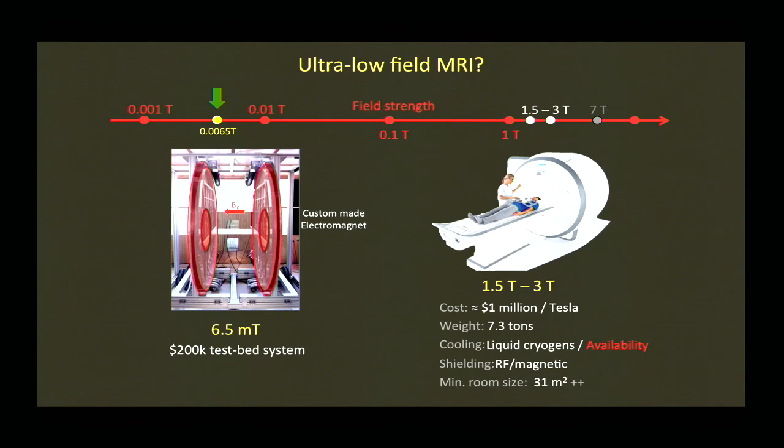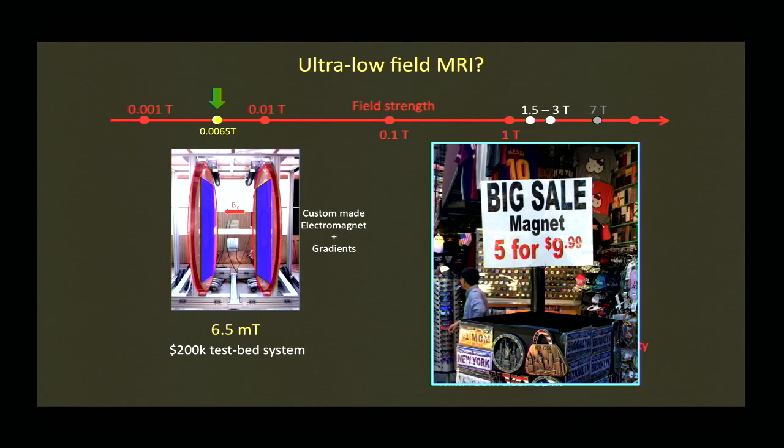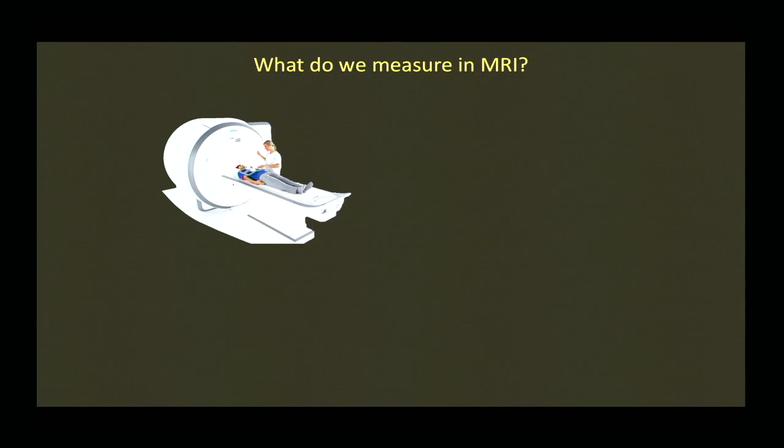This scanner was built by me and my then graduate student Leo Tsai in 2004. It is a high-performance electromagnet at 6.5 mT. It's an eighth-order magnetic field with four coils, two per side, that make the main field, and a very linear, although weak, roughly one millitesla per meter gradient set. This system costs around $200k to put together. I'm a physicist, not an engineer — if you want to build one, you could do it cheaper.